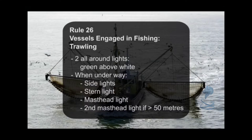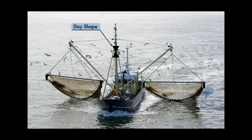Rule 26, Sailing Vessels Engaged in Fishing, Trawling: two all-around lights, green above white. When underway: side lights, stern light, masthead light, and a second masthead light if length overall is greater than 50 meters. Day shape: two cones with their apexes together in a vertical line, one above the other.